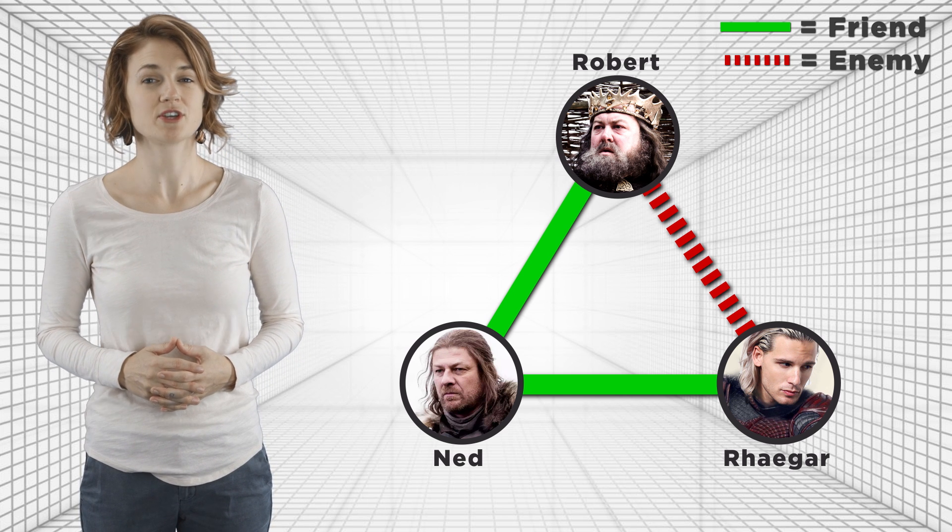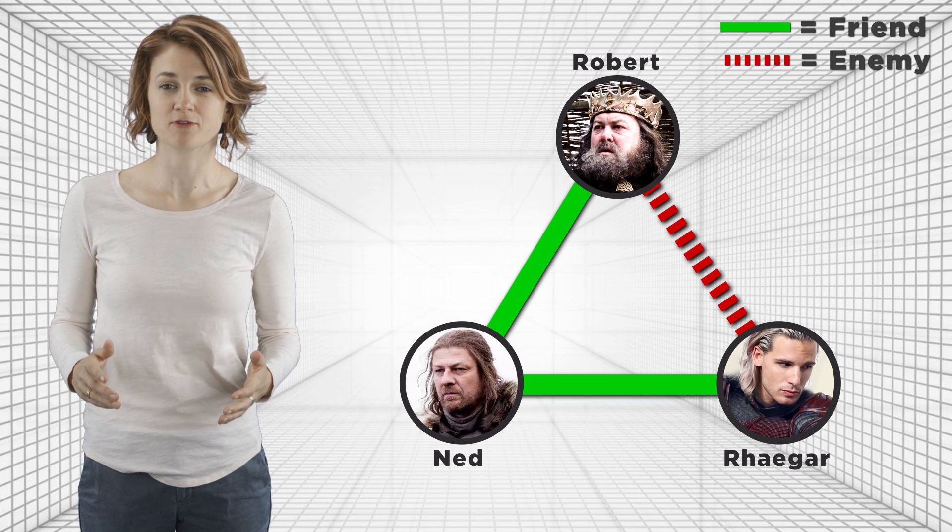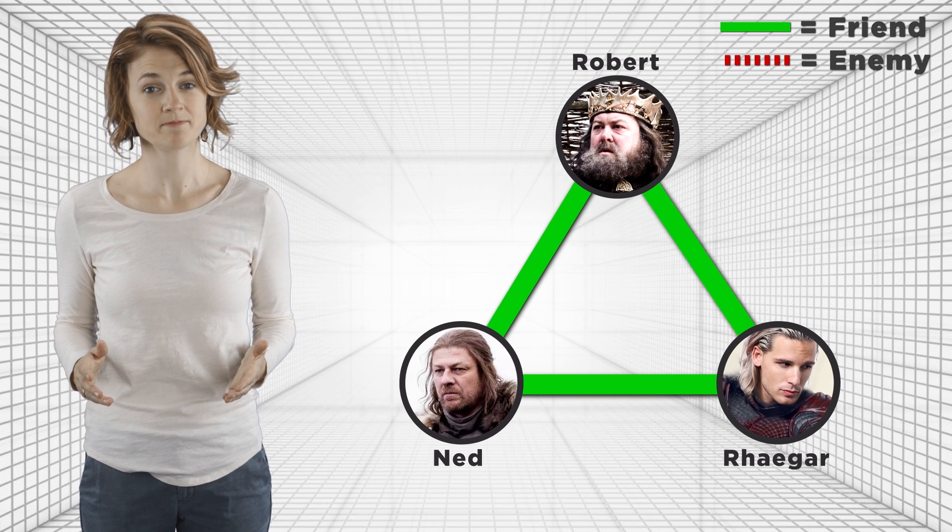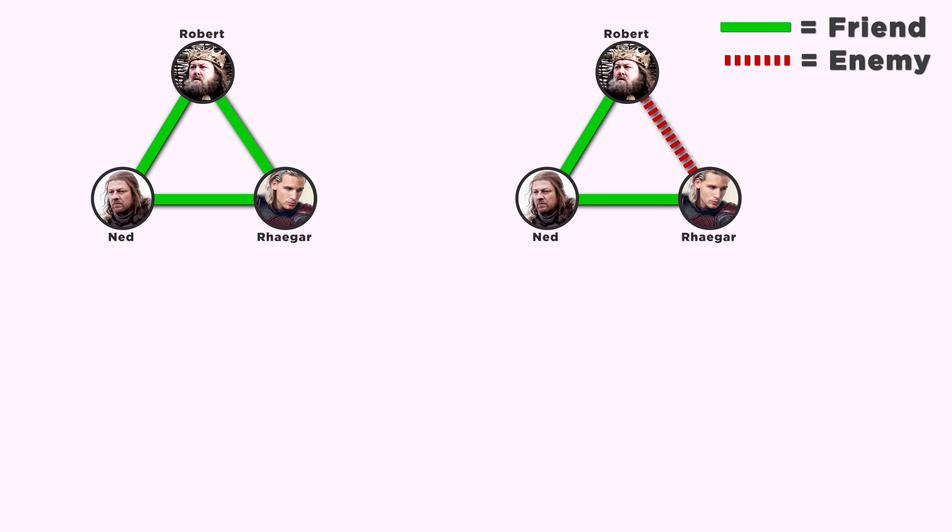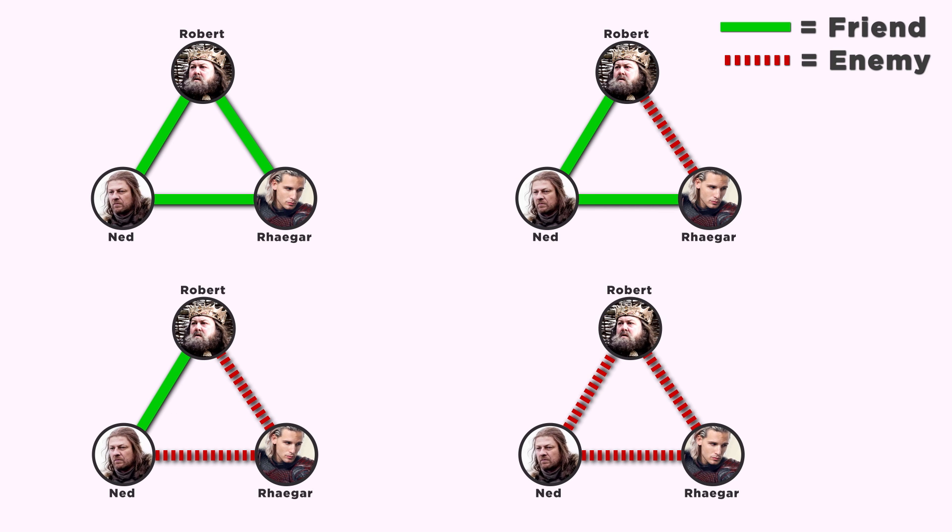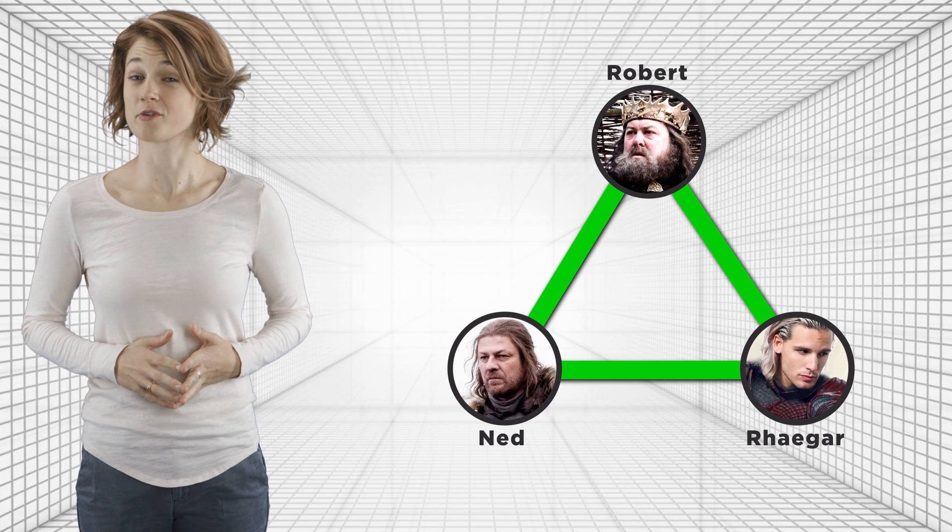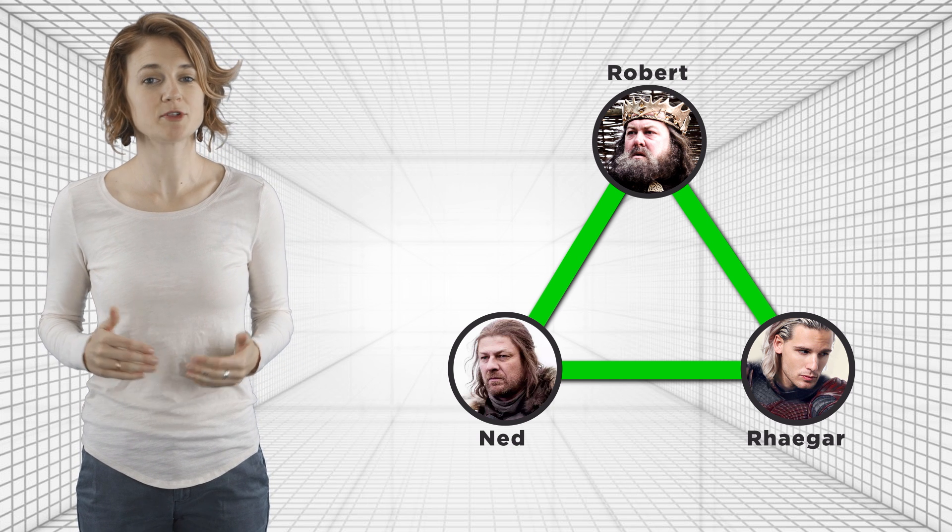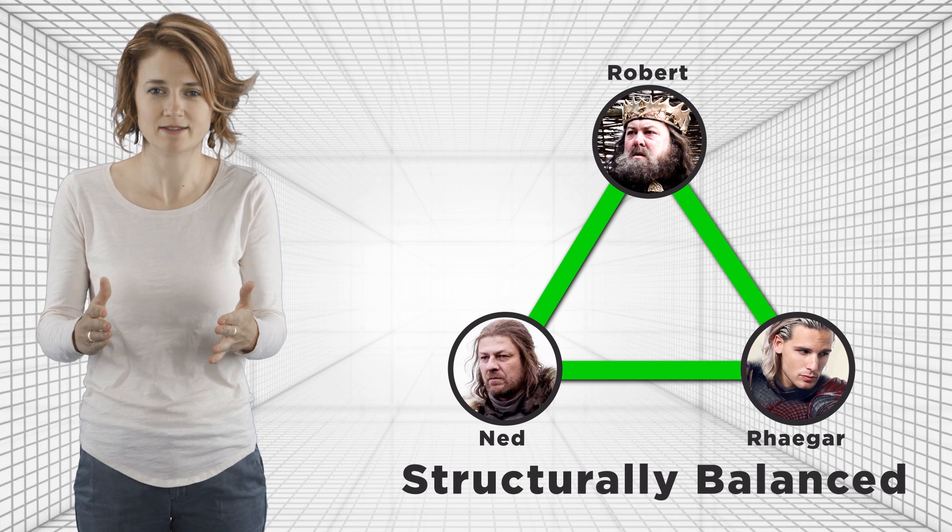Among three individuals, there's only four essentially different relationship triangles. All three relationships are green, two are green and one is red, one is green and two are red, or they're all red. Theories in social psychology suggest that some of these configurations, like the one with all green edges, are more stable than others. They call these stable triangles structurally balanced.